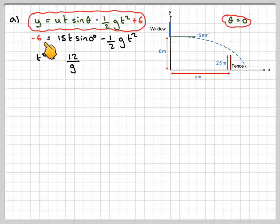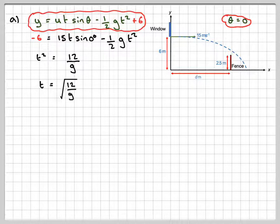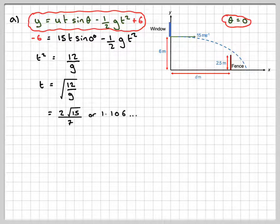2 times 6 divided by g. So t will be the square root of 12 over g which is 2 root 15 over 7 or 1.106 or 1.11 seconds.